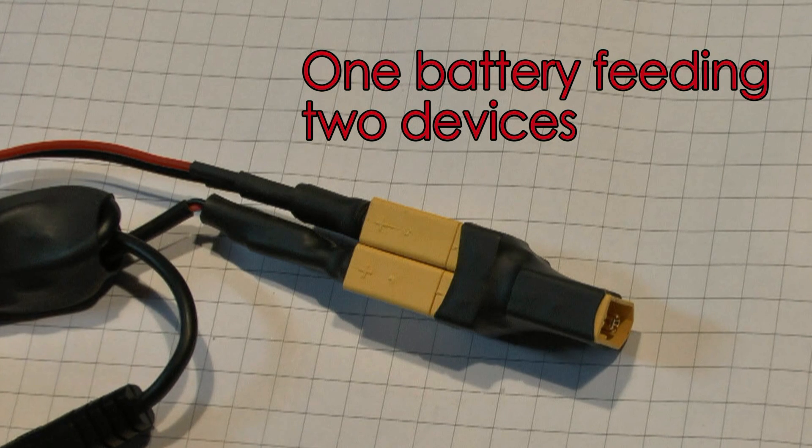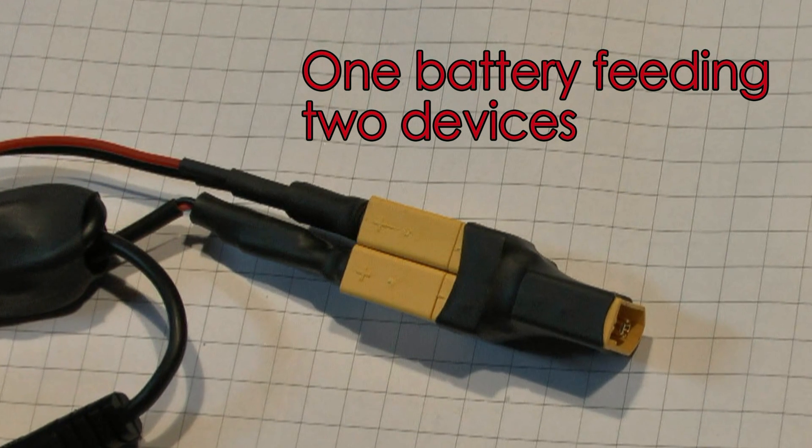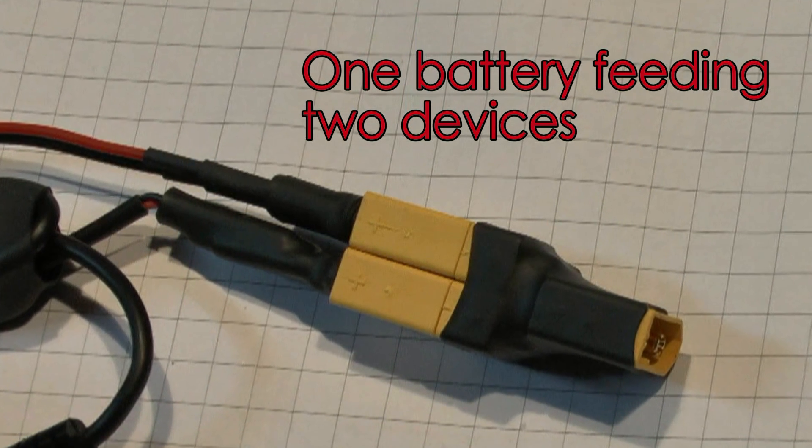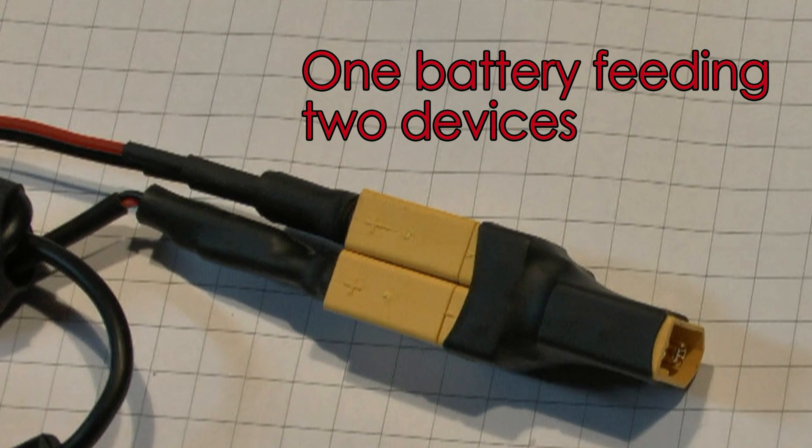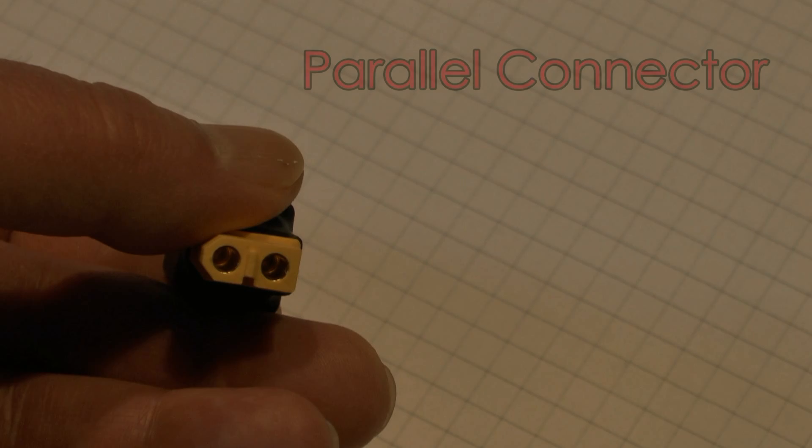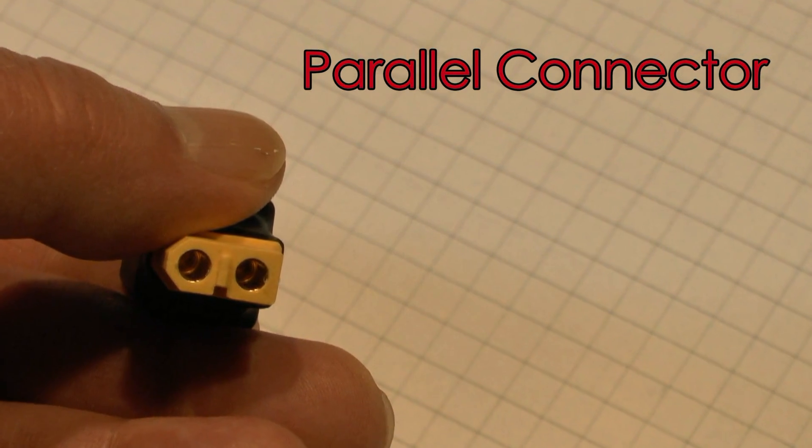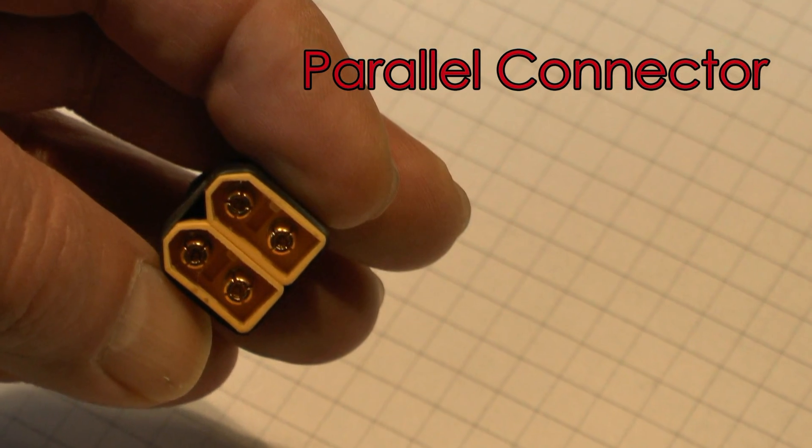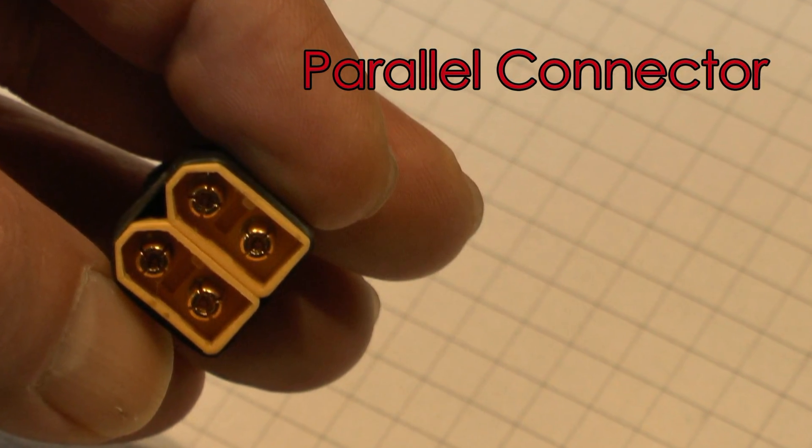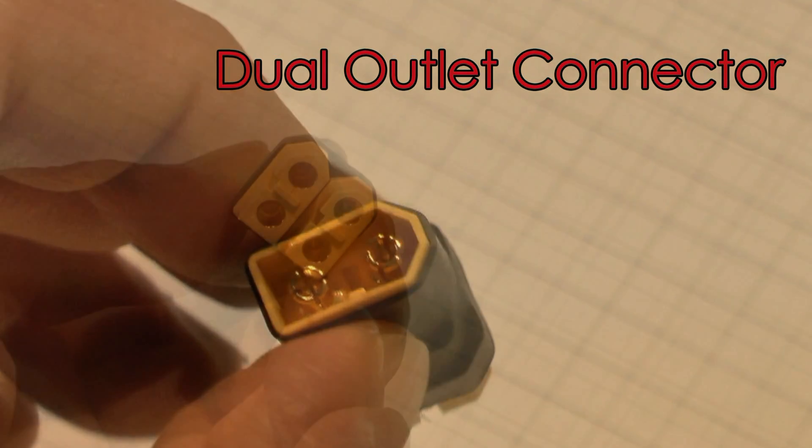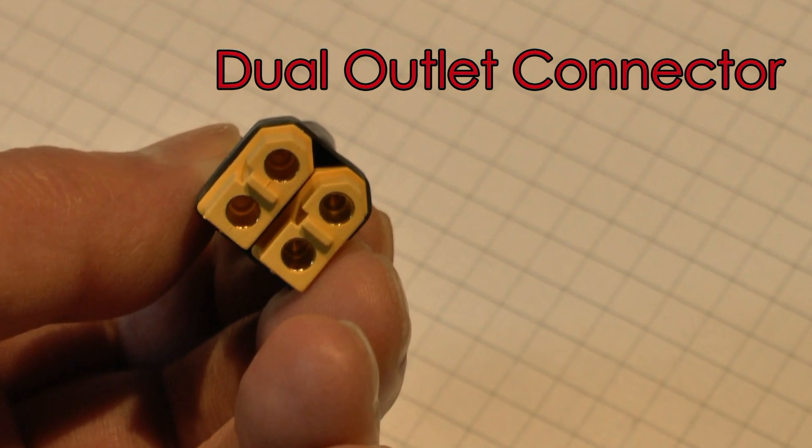So what is a dual outlet connector? Well, it's exactly the same as a parallel connector, only completely different. They are actually the same except that we reverse the connectors. With a parallel connector, you have one female and two male connectors so you can hook two batteries in parallel to one device. With a dual outlet connector, you've got one male and two females so you can run two devices off one battery.